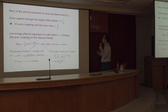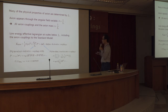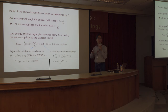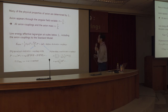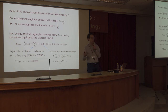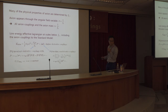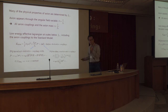Why is the axion decay constant important? The main reason is that much of the low-energy physics is determined by this single parameter f_a. As the discussion suggested, the axion appears in most cases through the angular field combination a/f_a, so all axion couplings, and even the axion mass, are inversely proportional to f_a. If you write down the low-energy Lagrangian, at energy scales well below f_a you have derivative couplings to standard model currents — the fermion current and Higgs current.